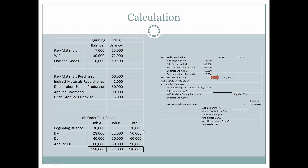We can also see from the job order cost sheet, from the previous example used when we looked at job order costing, that the direct materials used in production was $50,000 — which agrees with our calculation.